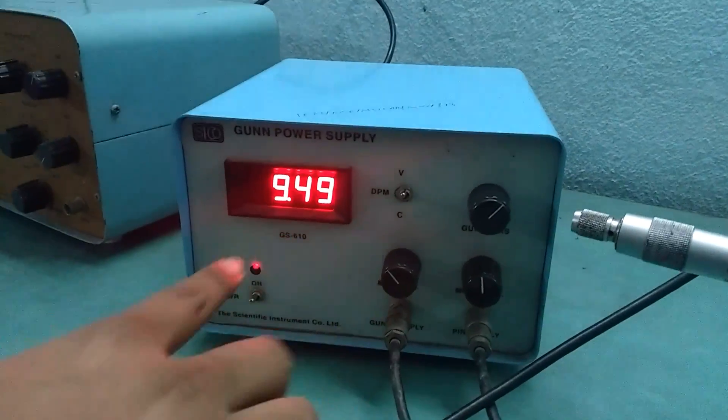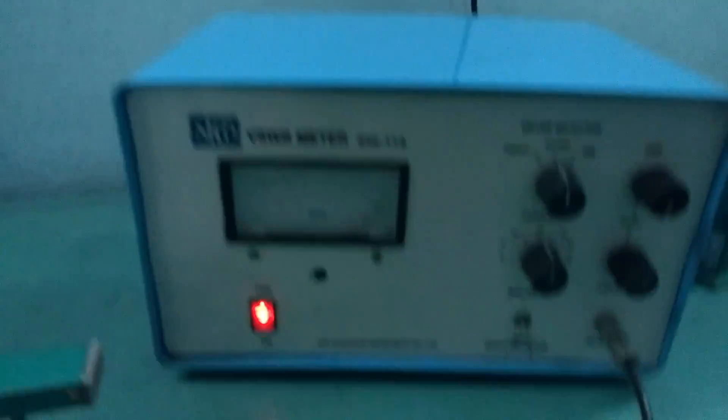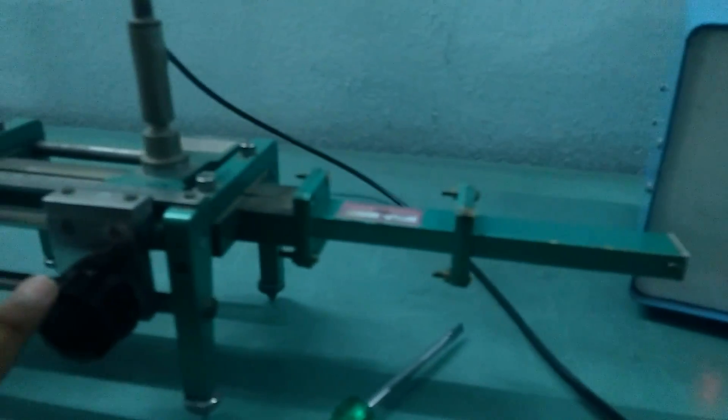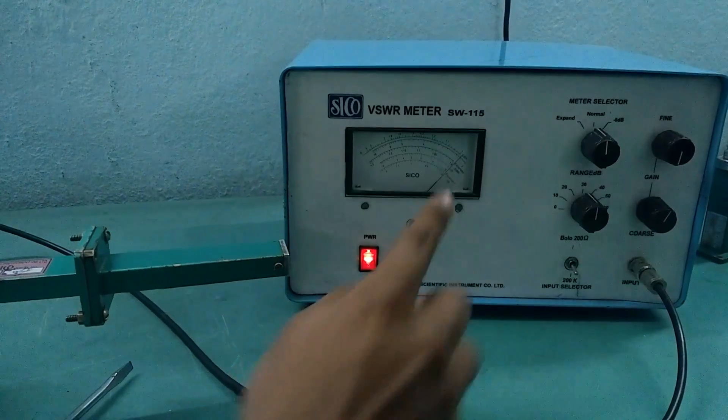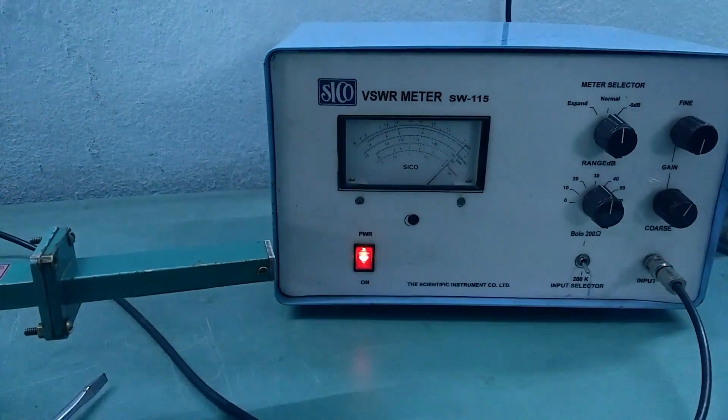We fix the gun bias voltage at 9.5 volts and move to the VSWR meter. As we can see, the position is at 0 now and we will shift it to get a maximum. A maximum deflection will be when the needle makes this deflection.